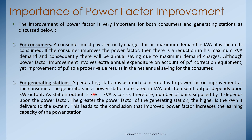For a generating station, generators are rated in kVA, but the useful output depends on kW output. kW = kVA × cos(phi). Therefore, the higher the power factor of the generating station, the higher the kWh it can deliver to the system. This leads to the conclusion that improved power factor increases the earning capacity of the power station.